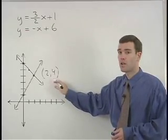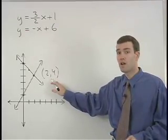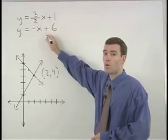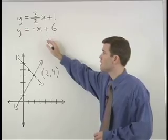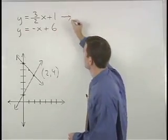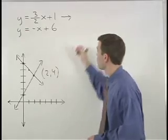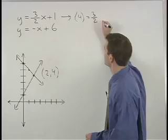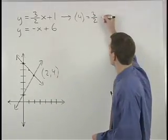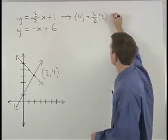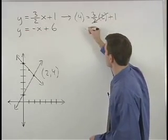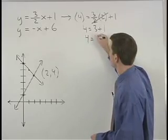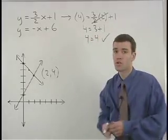It's very easy to check your answer by plugging these values for x and y back into each of the two original equations to see if they work. For our first equation, y is 4 equals 3 halves times x, which is 2, plus 1. The 2's cancel. We have 4 equals 3 plus 1, so 4 equals 4. And our first equation checks.